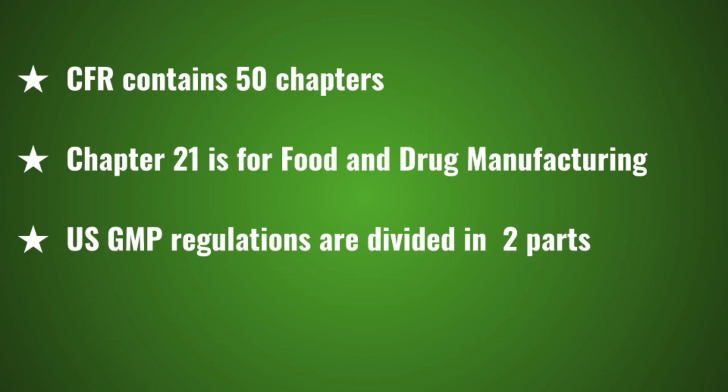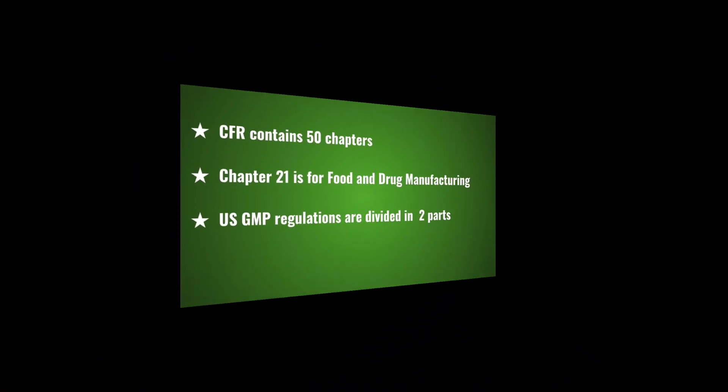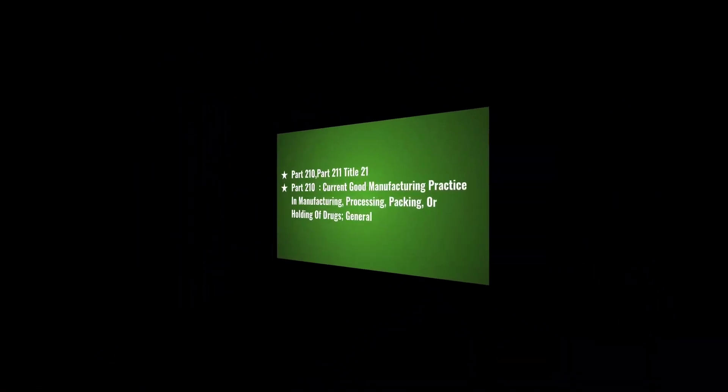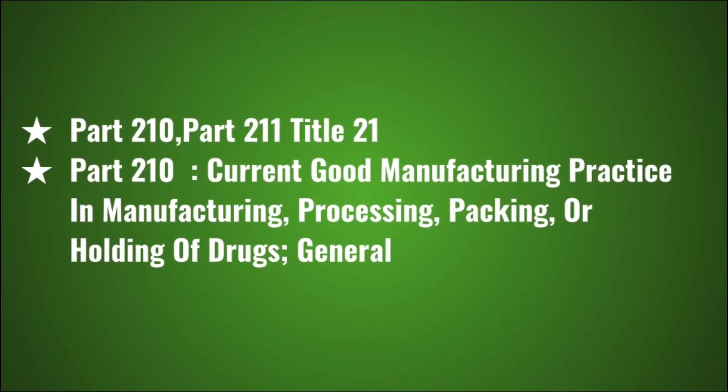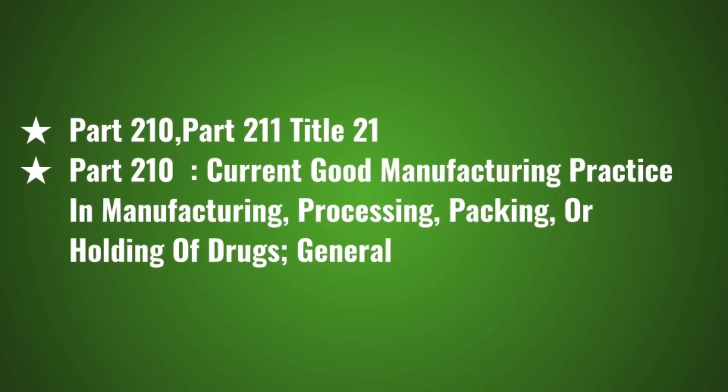The CFR contains 50 chapters. Chapter 21 is for Food and Drug Manufacturing. U.S. GMP regulations are divided into two parts: Part 210, Title 21 — Current Good Manufacturing Practice in Manufacturing Process, Packing or Holding of Drugs — General.